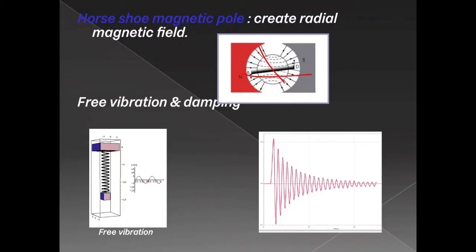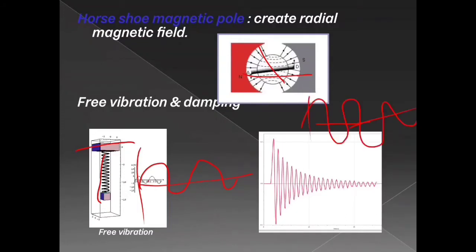Let's see free vibration and damping. Free vibration means when we hang a weight on a spring, it will oscillate in a wave pattern. In some particular state, the wave pattern will be reduced because of air resistance and material properties, as seen in this graph.